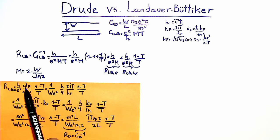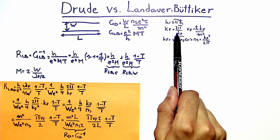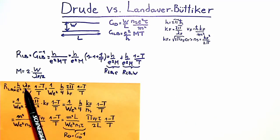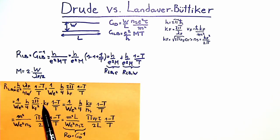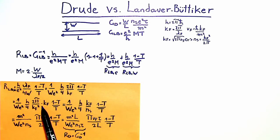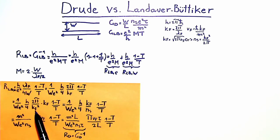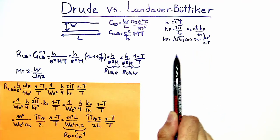We express the Fermi wavelength λ_F in terms of the Fermi wave number k_F using λ_F = 2π/k_F, replacing λ_F accordingly. Then we multiply both numerator and denominator by an additional k_F — essentially multiplying by 1, leaving the expression unchanged — so that the term 2π/k_F² can be associated with the electron sheet density N_s.